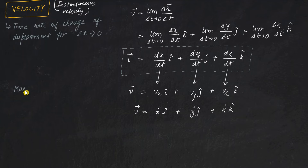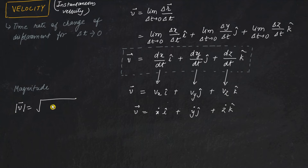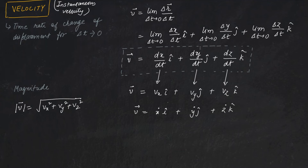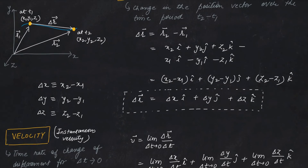Since velocity is a vector quantity, it has both magnitude and direction. The magnitude of the velocity vector is simply the square root of the sum of the squares of its components: |v| equals the square root of (vx² + vy² + vz²). I'll explain shortly what this magnitude represents.